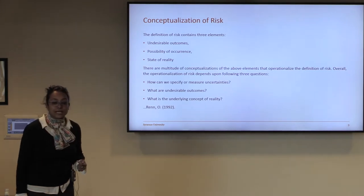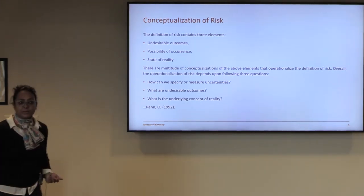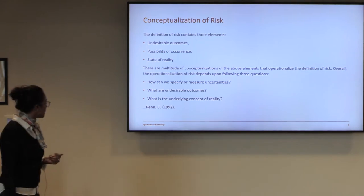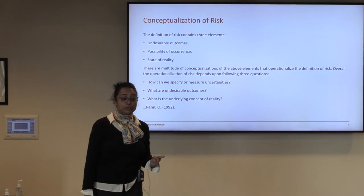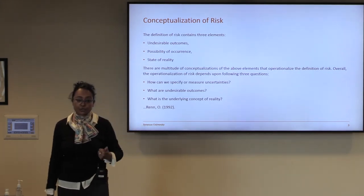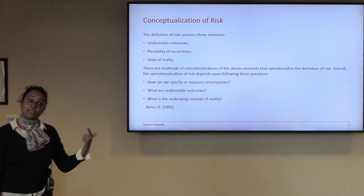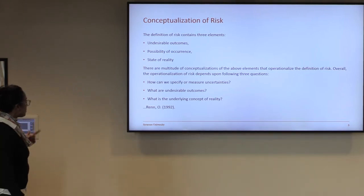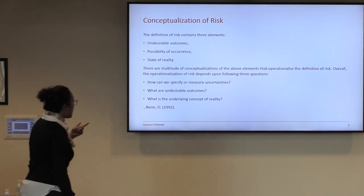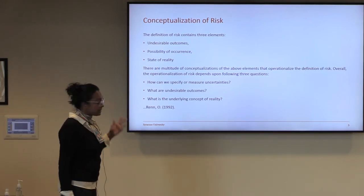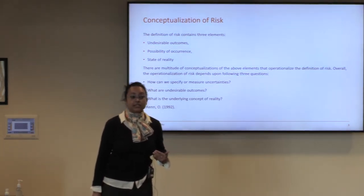In terms of the conceptualization of risk, there are three elements we can think of. First is the undesirable effects or outcomes that may be detrimental to humankind and the ecosystem. Second is the probability of whether that occurrence would happen or not. And the third is the state of reality that we have set for ourselves in a given situation.